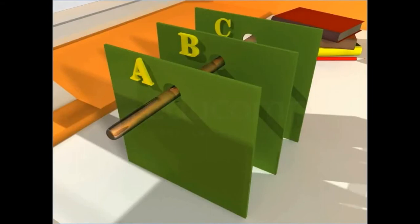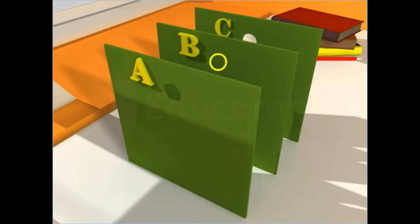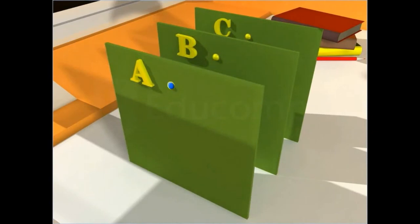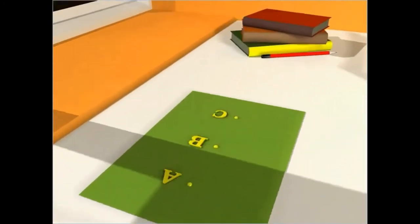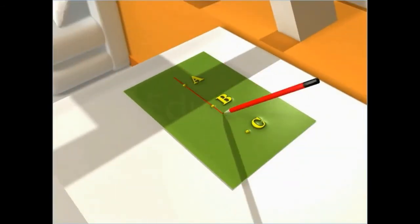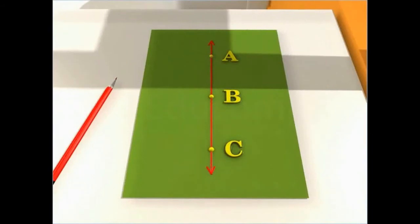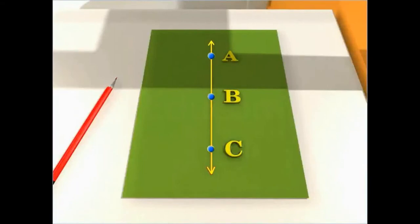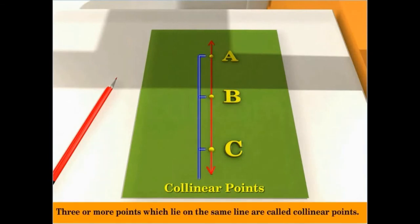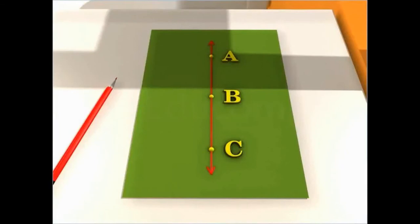In the case where three cardboard pieces stand one behind the other, if the holes A, B, and C are replaced by points A, B, and C, and then you draw a straight line joining the points A and B, such three or more points which lie on the same line are called collinear points. The line on which collinear points lie is known as the line of collinearity.